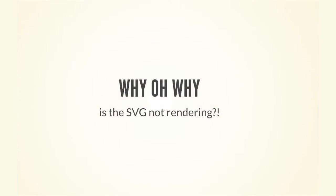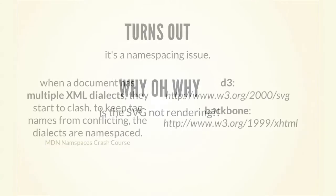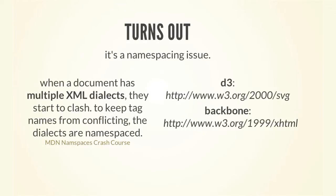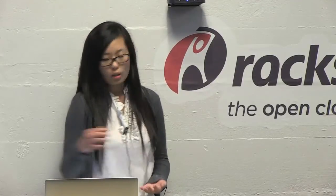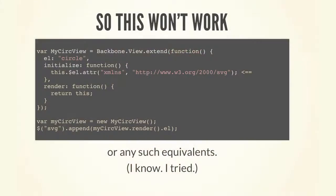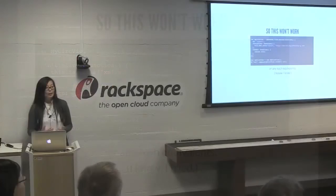This did not work out well for me, and I couldn't figure out for hours why it wasn't working. Once we started to Google, it turns out it's a namespacing issue. When you have multiple XML dialects within your document, your tag names might start to be the same and collide. So to keep that from happening, we have to namespace our dialects. What happens with Backbone is that once you instantiate something, it automatically namespaces it to HTML. So when I tried to do something naive like setting the namespace onto the element to make it into an SVG namespace, it really did not work.